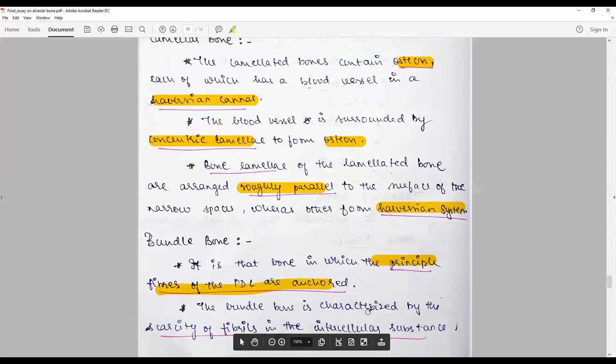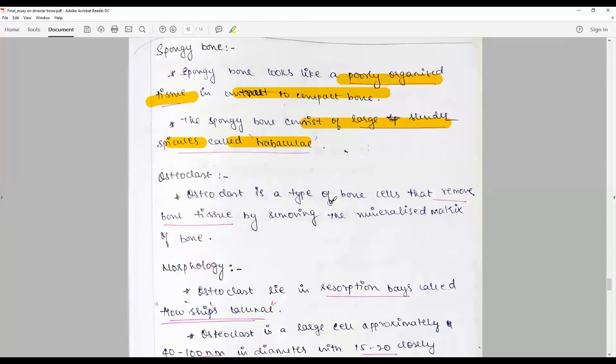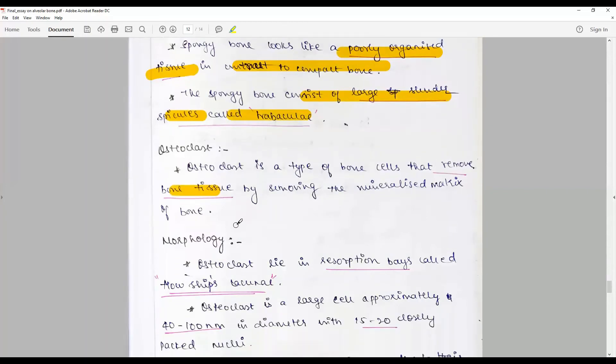The bundle bone is characterized by the scarcity of the fibrils in the intercellular substance. Spongy bone is poorly organized tissue in contrast to compact bone, consists of rods and spindles or trabeculae. Osteoclasts are the bone cells that remove the bone tissue and may be seen.